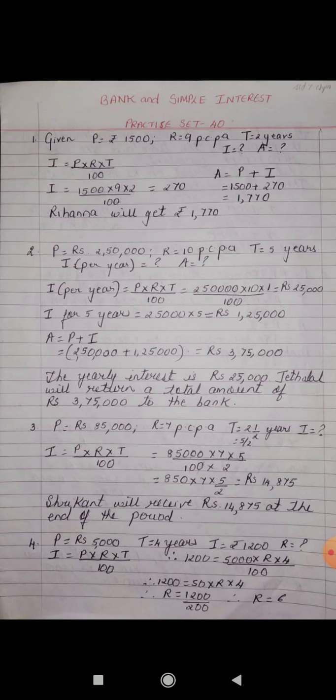Using I = P × R × T / 100: 1200 = 5000 × R × 4 / 100. After cancelling two zeros, we get 1200 = 50 × R × 4. Rearranging: R = 1200 / (200) = 6. So the rate is 6% per annum.